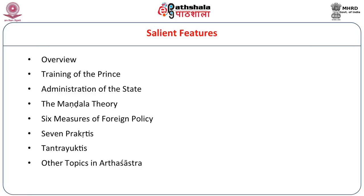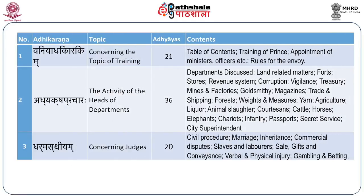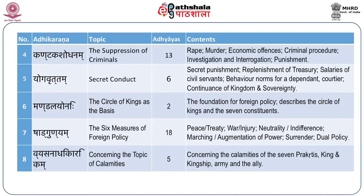I will give you an overview first and then take you through topics such as training of the prince, administration of the state, the mandala theory, six measures of foreign policy, seven prakritis, Tantra Yuktis, and other topics. The fifteen Adhikaranas deal with: first, training of the prince; second, activity of heads of departments; third, one concerning judges; fourth, suppression of criminals; and fifth, secret conduct — that is, of spies, etc.